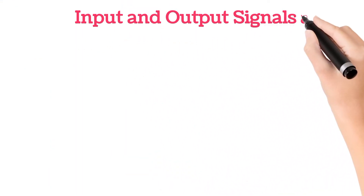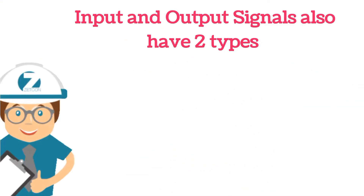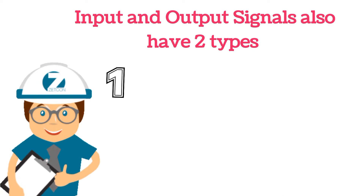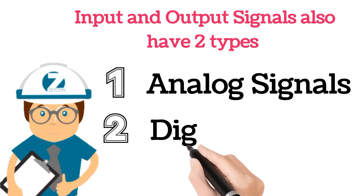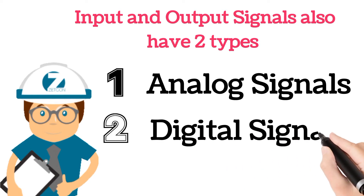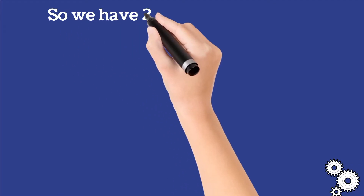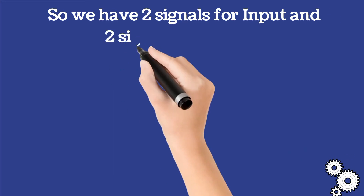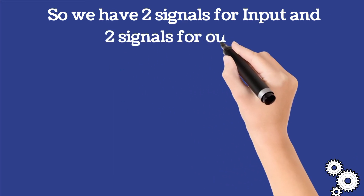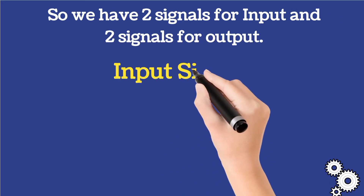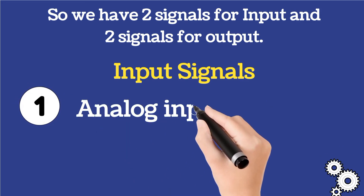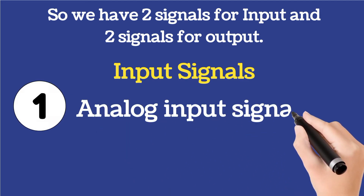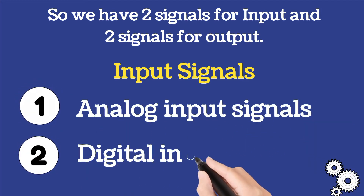Input and output signals each have two types: the first is analog signals and the second is digital signals. So we have two signal types for input and two for output. The input signals are analog input signals and digital input signals.